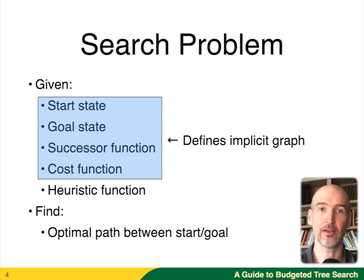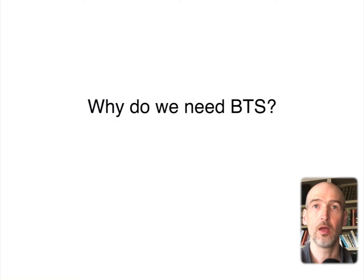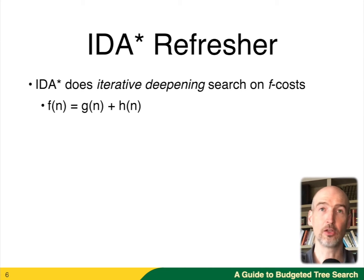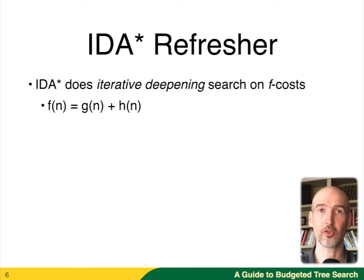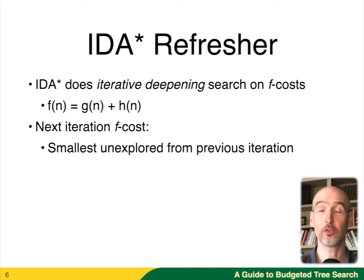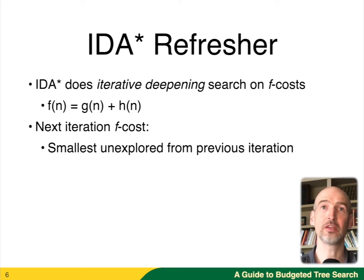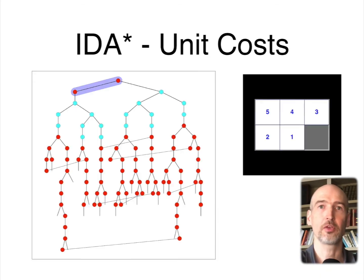The goal, at least for today, is to find optimal paths between the start and the goal. The first question we want to answer is: why do we need budgeted tree search? In order to understand that, we need to look at IDA*, which is the algorithm we're going to be comparing against. IDA* is an algorithm that does iterative deepening on F costs, where F costs are estimates of the optimal cost from the start to some node N and then from N to the goal. The G cost is the cost from the start to N, and the H cost is the estimate from N to the goal. IDA* is very conservative when it searches — it searches from the minimum F cost, then the next greatest F cost, and continues with iterative deepening iterations with each possible F cost.